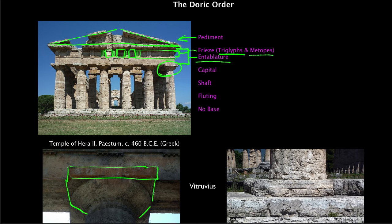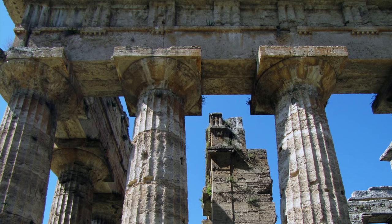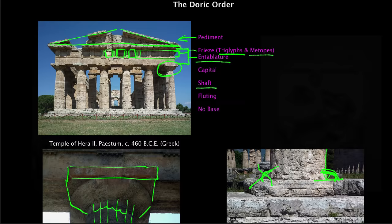Continuing down, we come to what we commonly call the column — but art historians call the shaft. If you look closely, there are vertical lines across the entire surface known as flutes. In the Doric, a flute is very shallow — a kind of scallop carved out of the surface — creating a nice vertical decorative pattern. Another defining feature of the Doric order is that at the bottom of the shaft there is no decorative foot; the shaft goes straight into the floor of the temple.